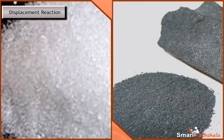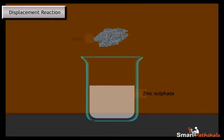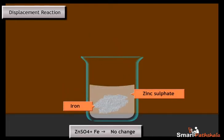In the same way, when we perform the same experiment with zinc sulphate and iron, iron will not be able to displace the zinc from the zinc sulphate because zinc is more reactive than iron.